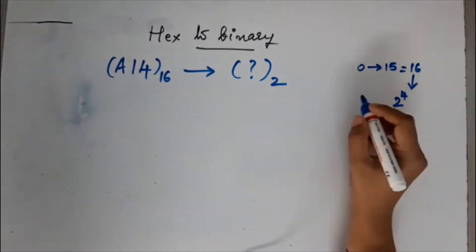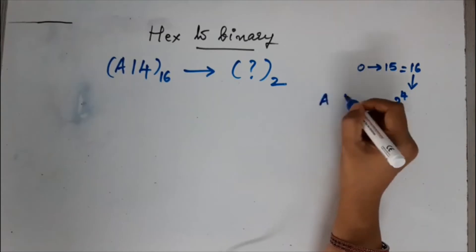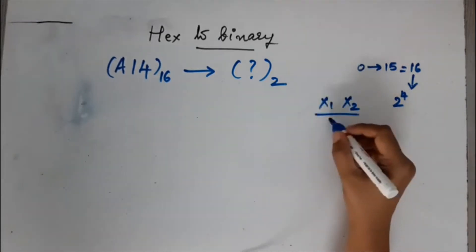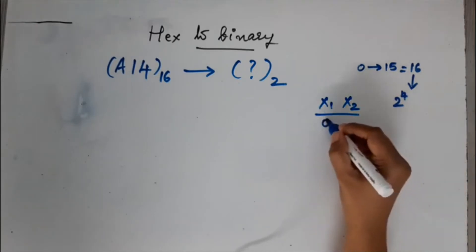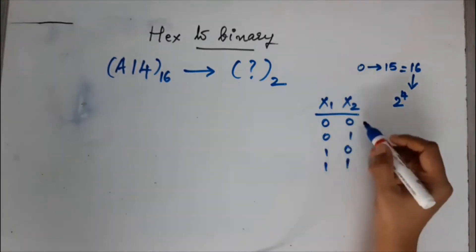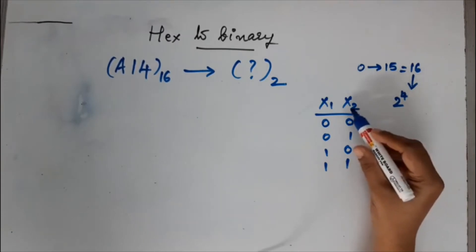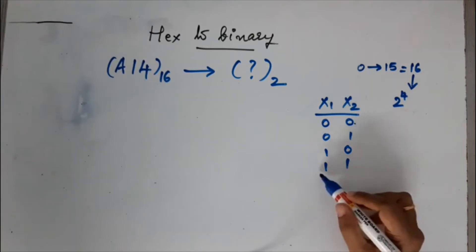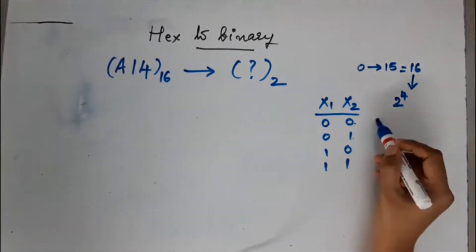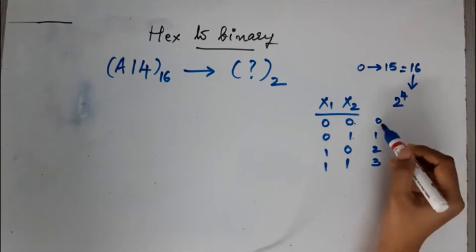If you have 2-bit numbers, suppose the bits are x1 and x2. You can write the combinations as 00, 01, 10, 11 — that is 0, 1, 2, 3. So the maximum number that can be represented using 2 bits is 3, and the number of different values you can represent using 2 bits is 4.